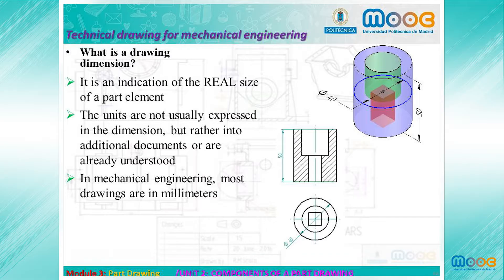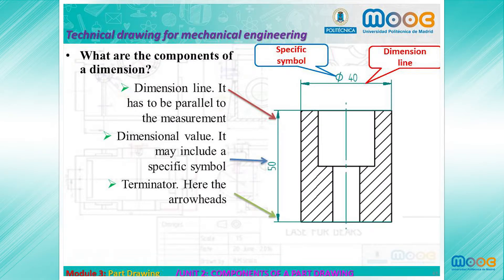What is a drawing dimension? It is an indication of the real size of a part element. The units of the dimension are not usually expressed in the dimension itself, but are already understood due to the relationship between manufacturers and engineers. In mechanical engineering, most drawings are in millimeters, though the use of inches is also very common in other parts of the world.